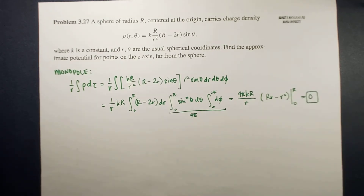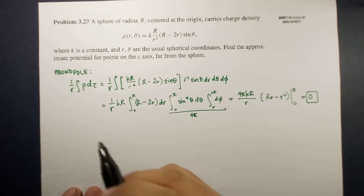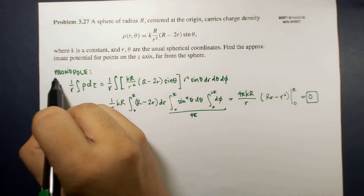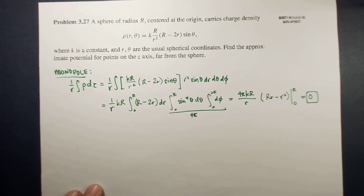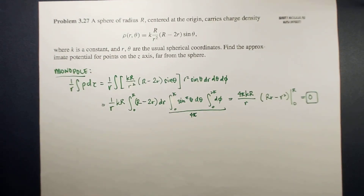Evaluating the radial integral: the integral of (r minus 2R) dr gives r-squared minus r times R, evaluated from 0 to R. At r equals R this gives R-squared minus R-squared, which equals zero, so the monopole contribution does not contribute to the total potential.